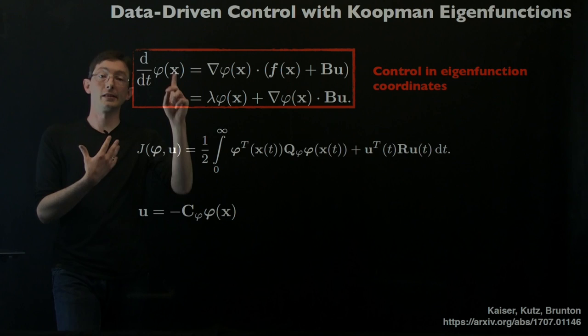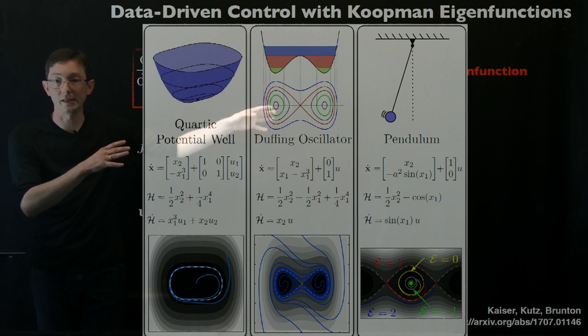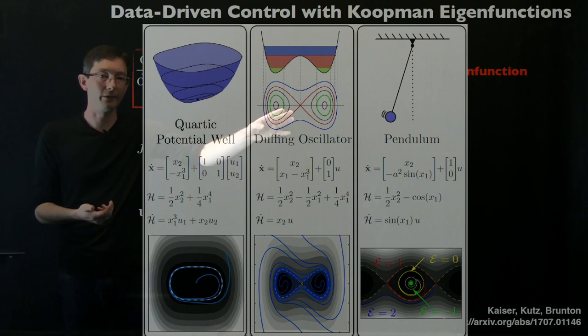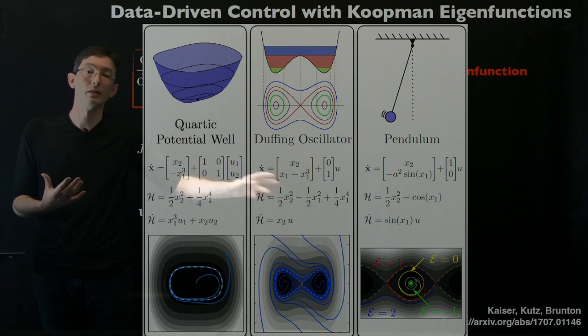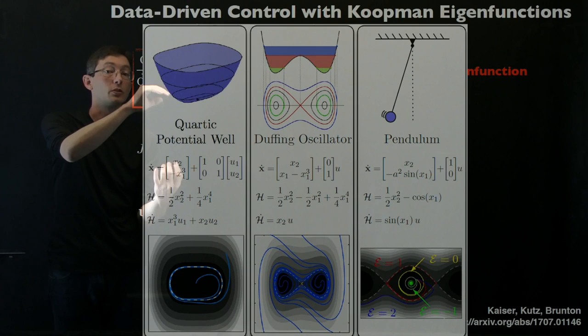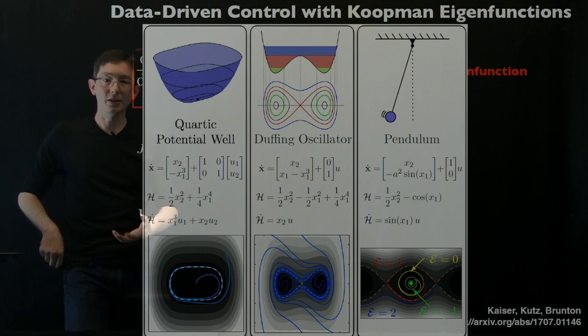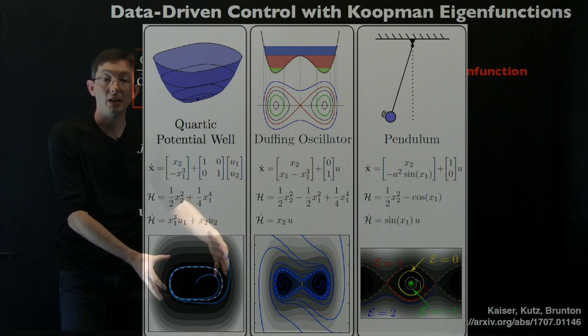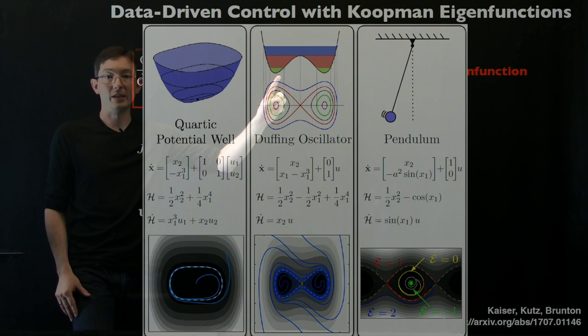Lots of Hamiltonian systems have this conserved energy as an eigenfunction. Here we have a quartic potential well, the Duffing oscillator, and the pendulum. In each of these cases, purely from measurement data, Eureka was able to extract these Koopman eigenfunctions, these lightly damped or not damped at all kind of zero eigenvalue conserved energy. Then she was able to design an optimal nonlinear control law in those coordinates to change the energy value. Either to go from the inside of a well up or down, or to stabilize the pendulum in different energy configurations.